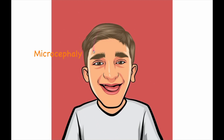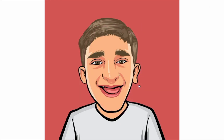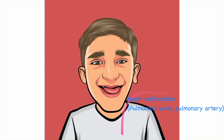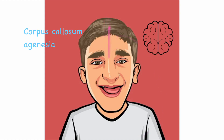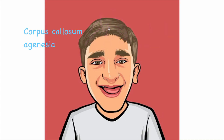Besides from these facial dysmorphias, you have also malformations in the organs. The most prominent are heart malformations, where the pulmonary valve and pulmonary artery are affected, genital malformation, and corpus callosum agenesis — so the corpus callosum that connects the hemispheres with each other is missing in these patients.